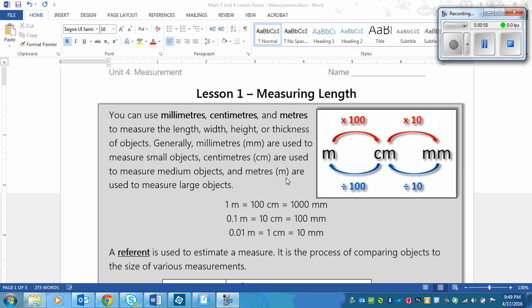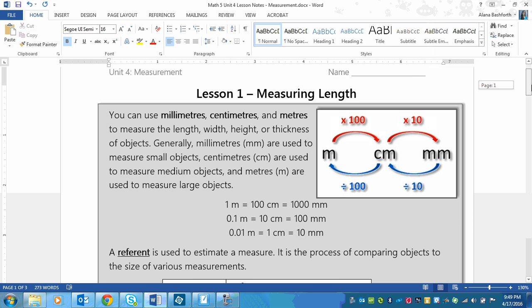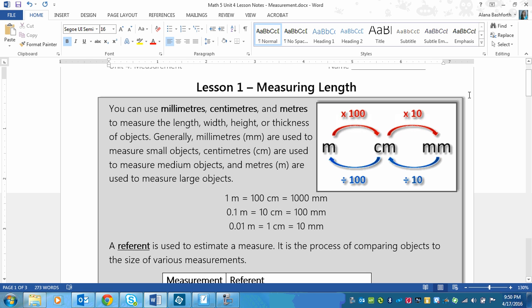And meters, written as lowercase m, are used to measure large objects like the length of your bedroom wall for example. Now we've done the conversions before in our decimals unit, but we're going to be practicing converting measurements again and we will also be thinking about which one of these millimeters, centimeters, and meters would we use to measure various objects.